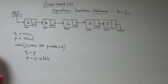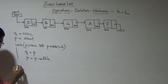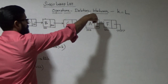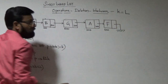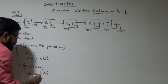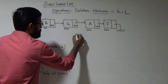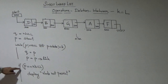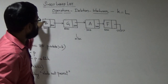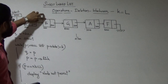After exiting the loop, first check whether the node to be deleted is present or not by checking if p == null. If p equals null, the node iterated through the entire list without being found, so display 'node not present.' In the else part, the node is in the list — it could be the first node or any other node.